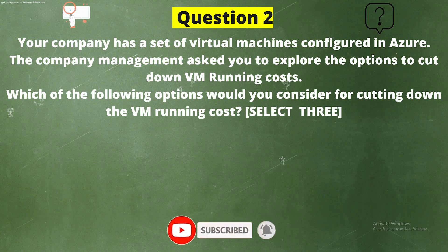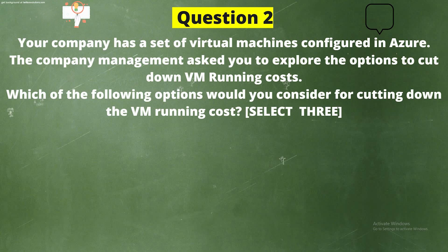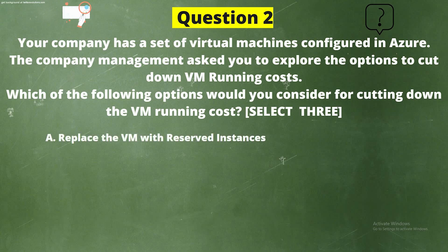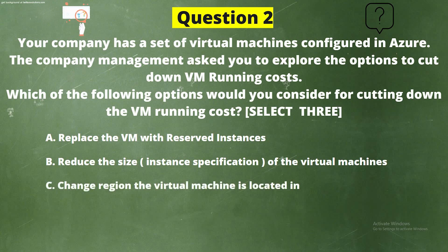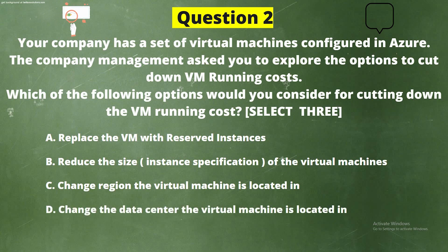Question 2: Your company has a set of virtual machines configured in Azure. The company management asks you to explore the options to cut down VM running cost. Which of the following options would you consider for cutting down the VM running cost? Select three. Options: A - Replace the VM with reserved instances, B - Reduce the size of the virtual machines, C - Change the region the virtual machine is located in, D - Change the data center the virtual machine is located in, E - Deallocate the public IP address from the virtual machine.